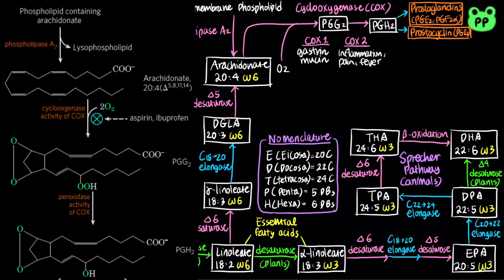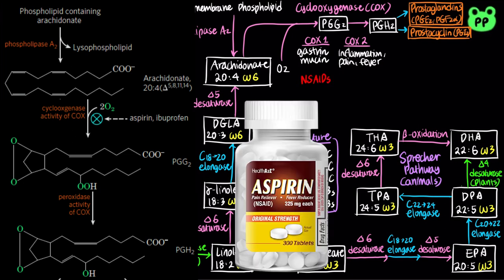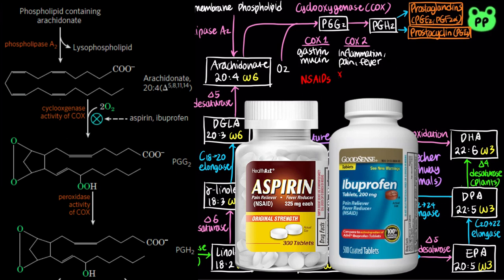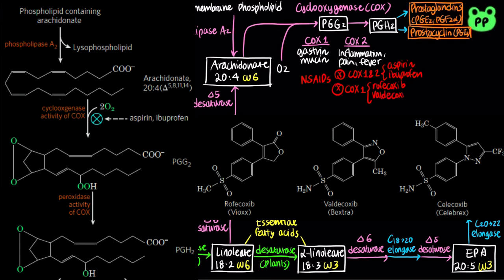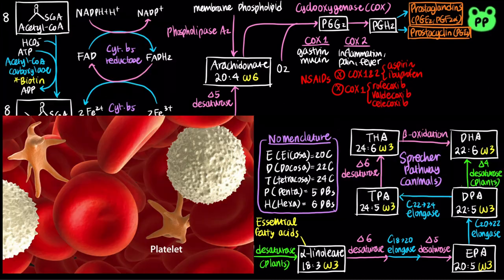Non-steroidal anti-inflammatory drugs, abbreviated as NSAIDs, relieve pain by inhibiting COX-2. Aspirin and ibuprofen inhibit both COX-1 and COX-2. Inhibition of COX-1 can result in undesired side effects, including stomach irritation and more serious conditions. A newer class of NSAIDs have greater specificity for COX-2, including rofecoxib, valdecoxib, and celecoxib.